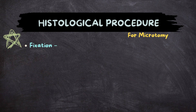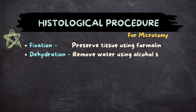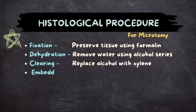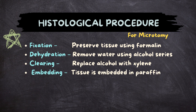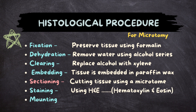The step-by-step process of tissue preparation: Fixation — preserve tissue using formalin. Dehydration — remove water using an alcohol series. Clearing — replace alcohol with xylene. Embedding — tissue is embedded in paraffin wax. Sectioning — cutting tissue using a microtome. Staining — using Hematoxylin and Eosin (H&E). Mounting — placing the section on a glass slide.